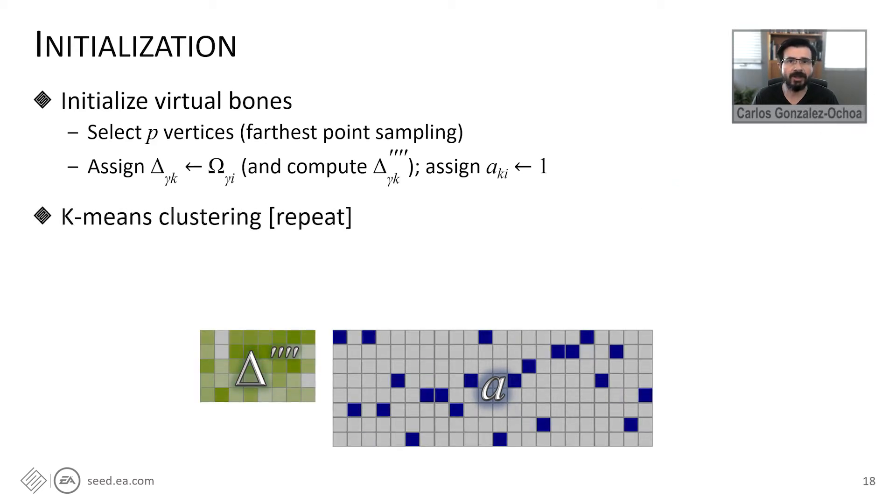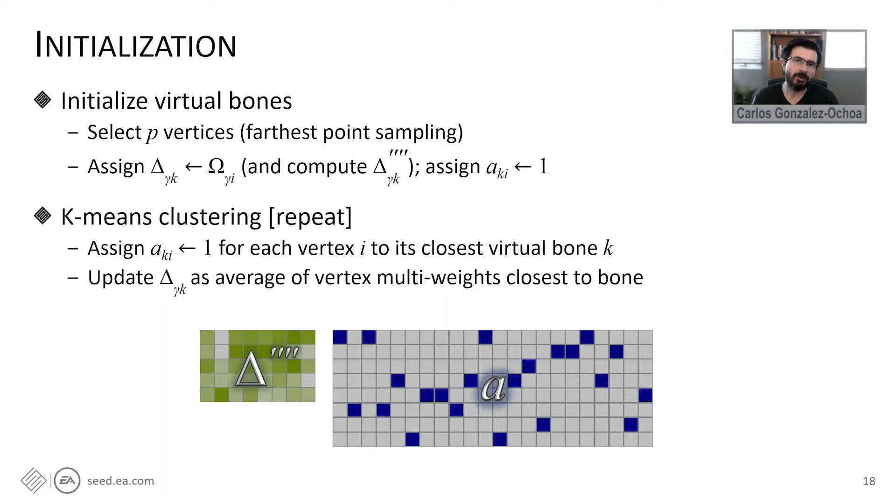The second part of the initialization, we set initial conditions to the scalar weights for the rest of the vertices and update the multi-weights matrices. Using K-means clustering, we find clusters of the closest vertices to each one of the virtual bonds. Note that we are using a distance metric between a vertex to the virtual bond in the DDM multi-weight space, and we are not using Euclidean distances. From these clusters, we update the multi-weights of the virtual bond as the average of the original DDM multi-weights. We also update the scalar weights for each one of the vertices from the virtual bond to the vertex.